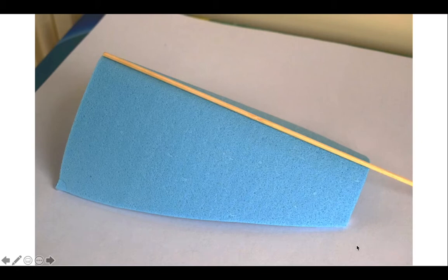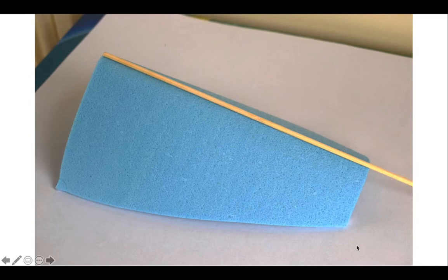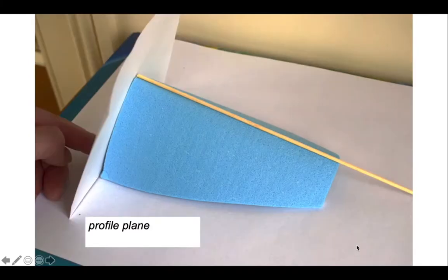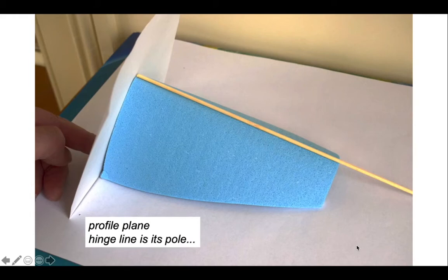The other feature we want to look at is the profile plane. The profile plane is the orientation we use to get a true measure of the fold tightness — in other words, the inter-limb angle. It's a cut across the fold structure in the orientation shown by that piece of card. The key point about the profile plane is that the hinge line is its pole, and that's a relationship we can use on a stereonet.